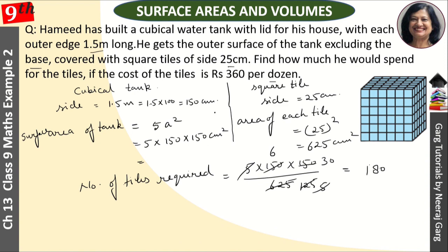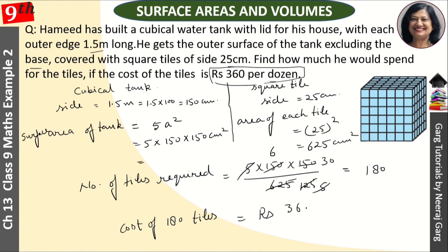Now we calculate the cost. Cost of 180 tiles — we have been given Rs. 360 per dozen, and one dozen is 12. So the cost is (360 ÷ 12) × 180.